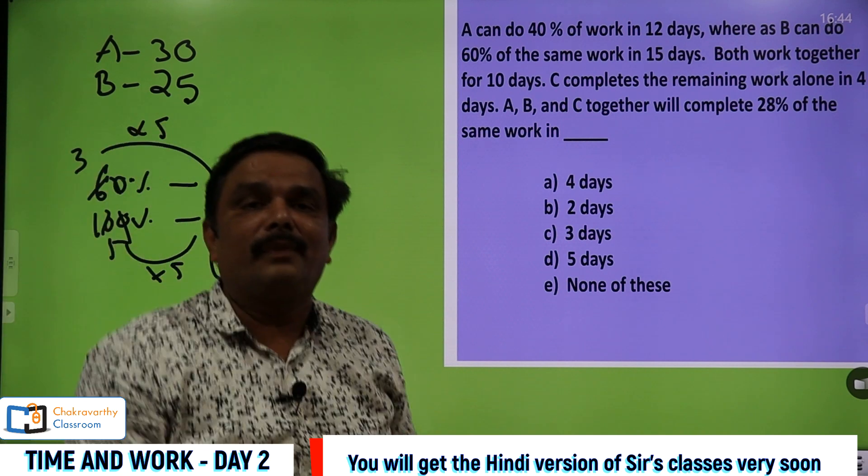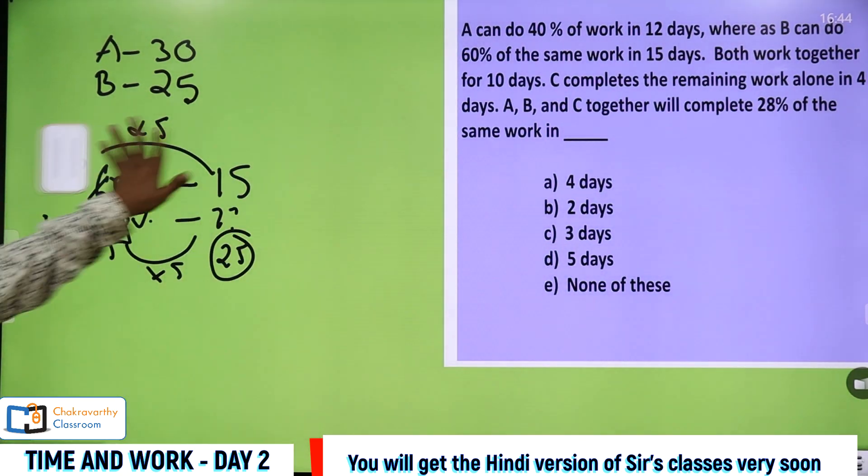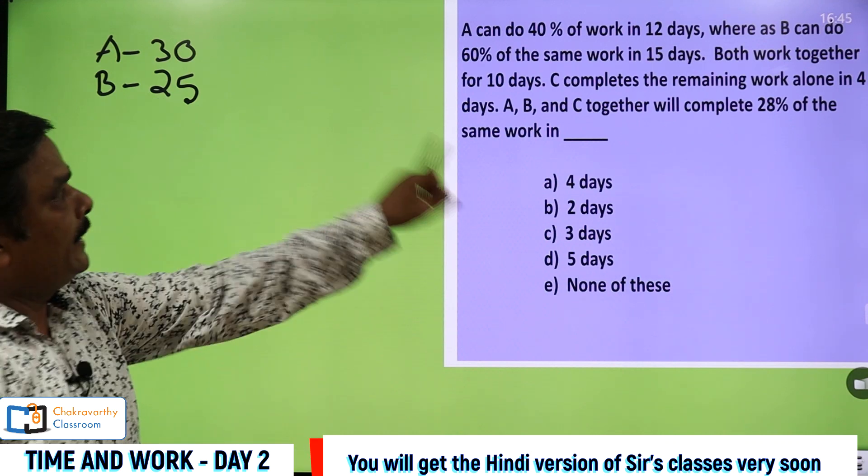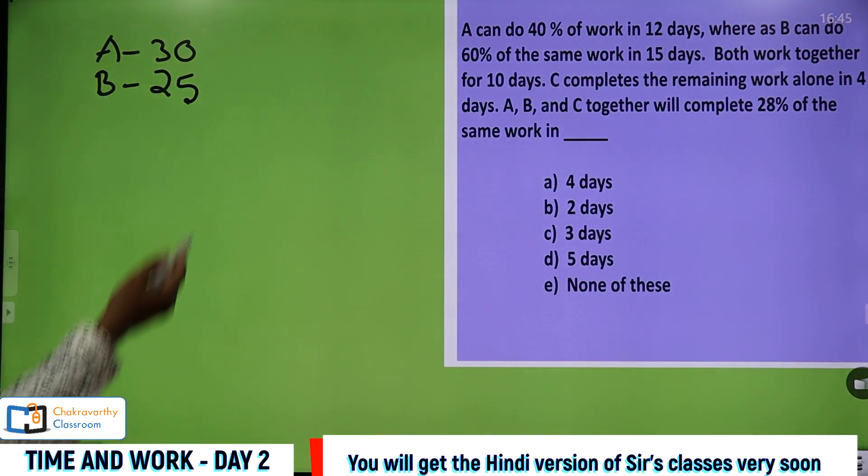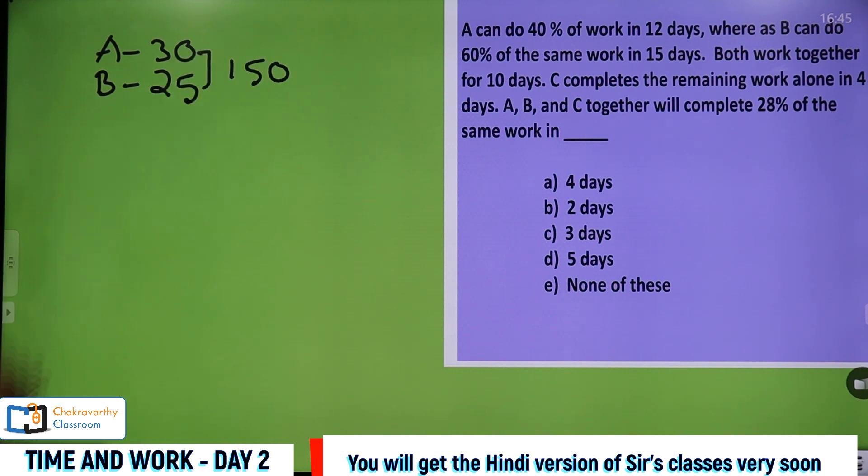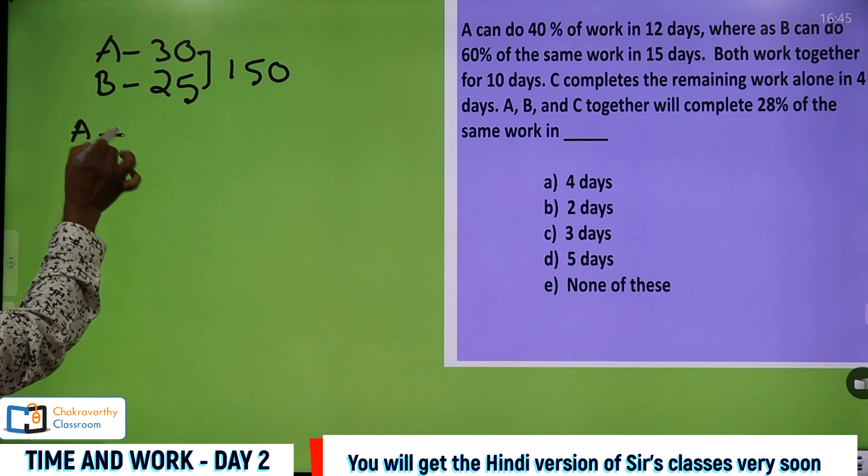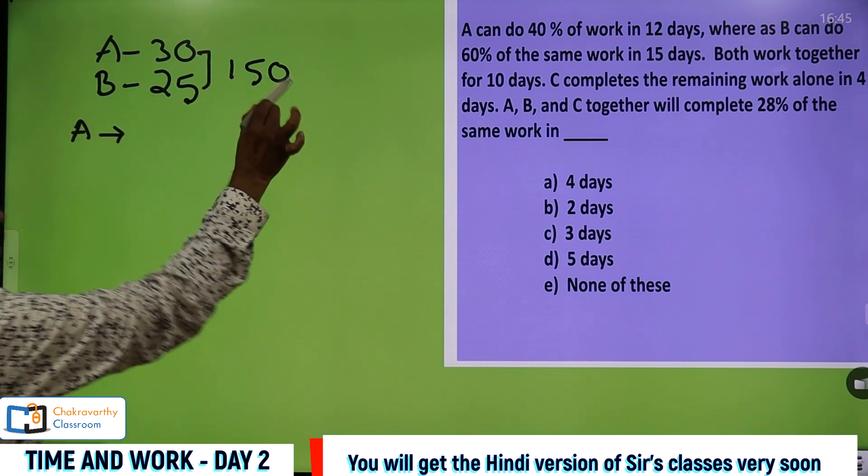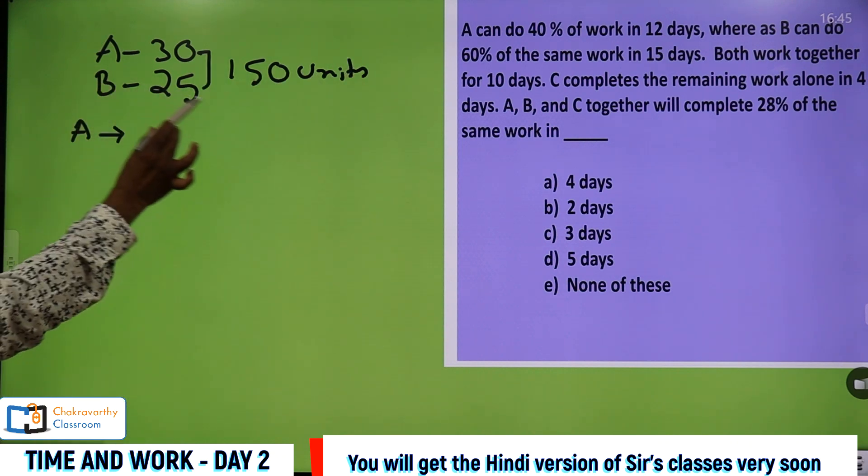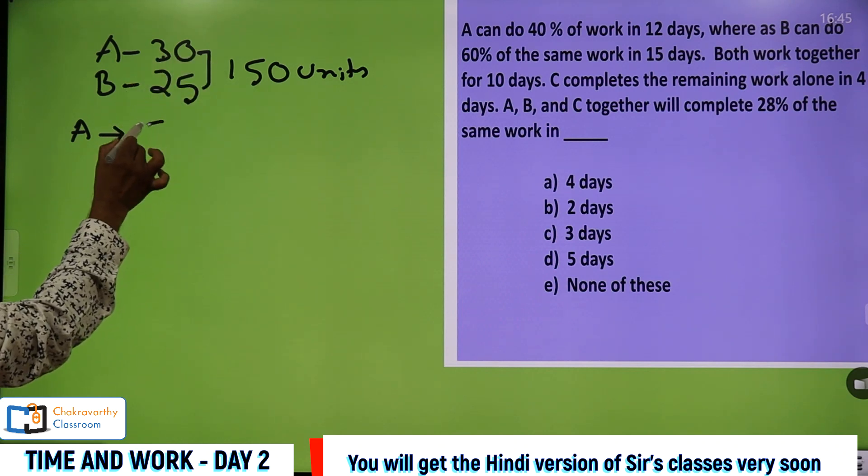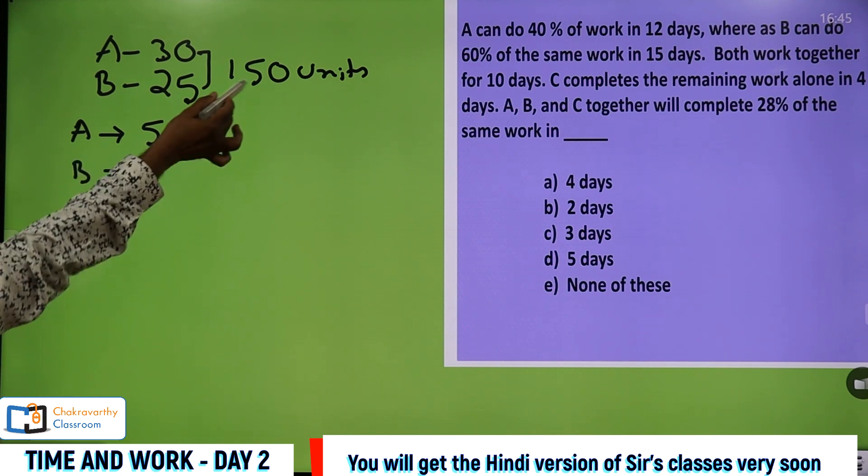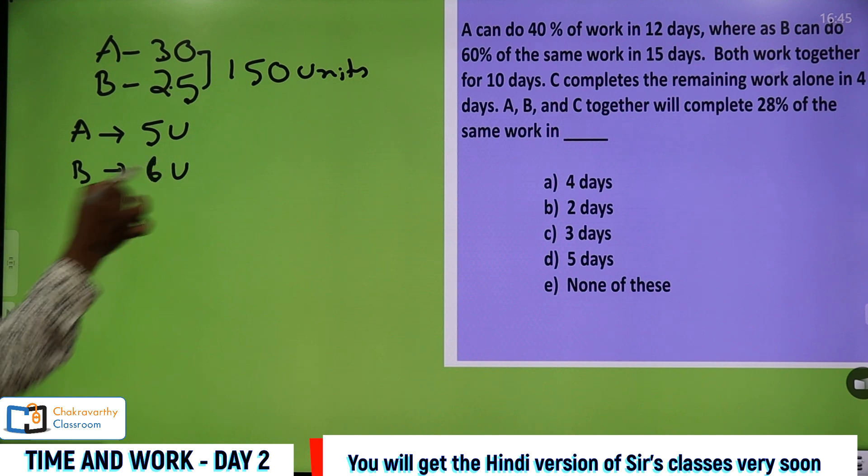A and B together worked for how many days? 10 days. Same LCM method here. 30 and 25, take the LCM. LCM is 150. A's capacity, that means one day's work - total work is 150 units. A's capacity in one day is 150 by 30, that is 5 units. B's capacity is 6 units, 150 by 25, 6 units in one day.